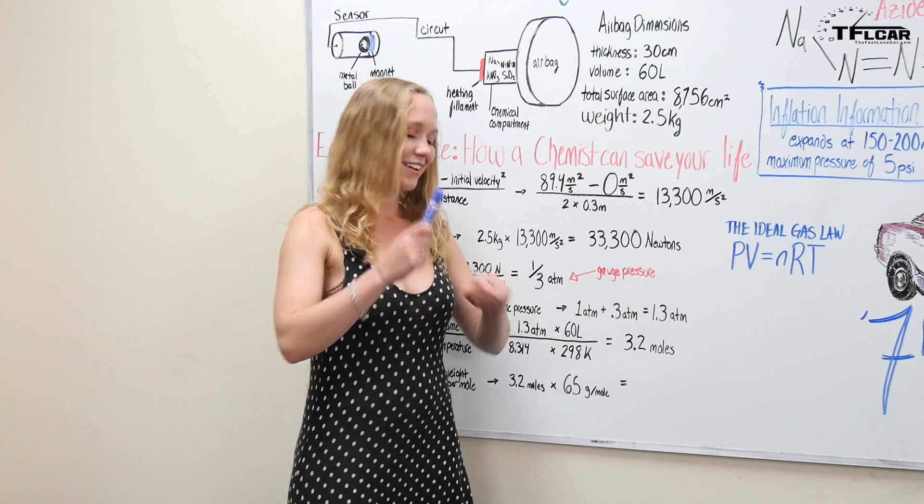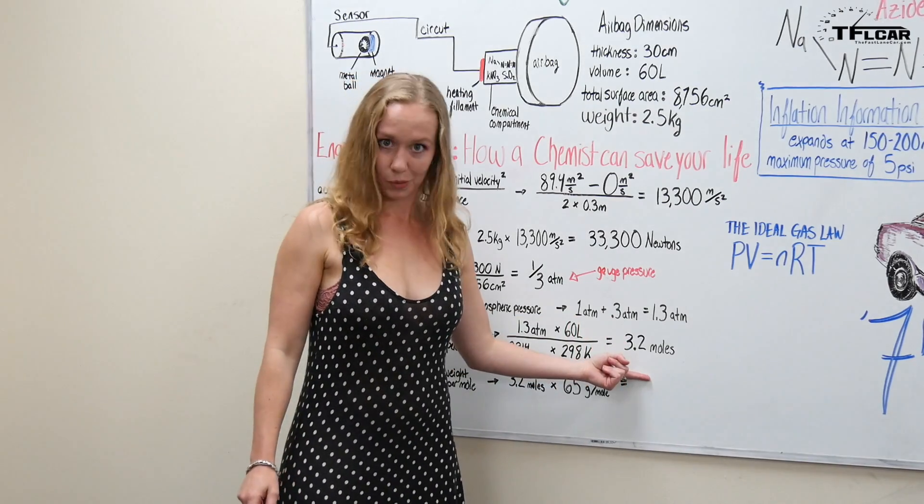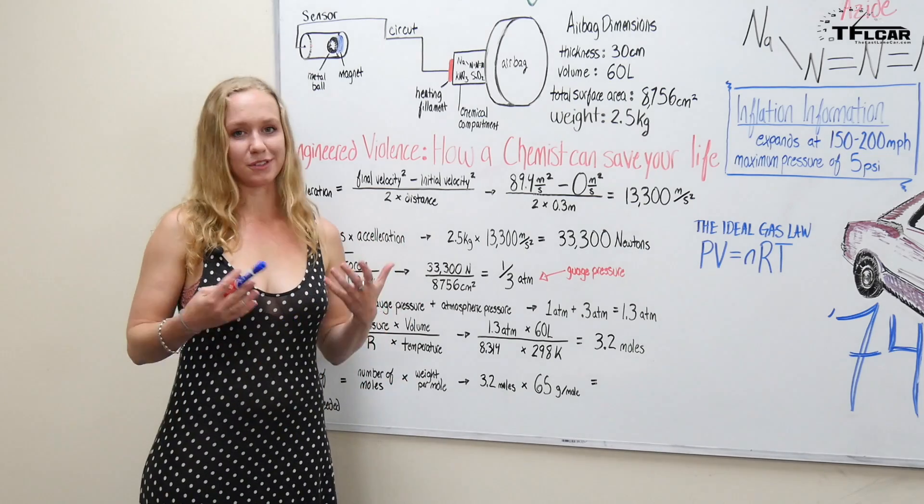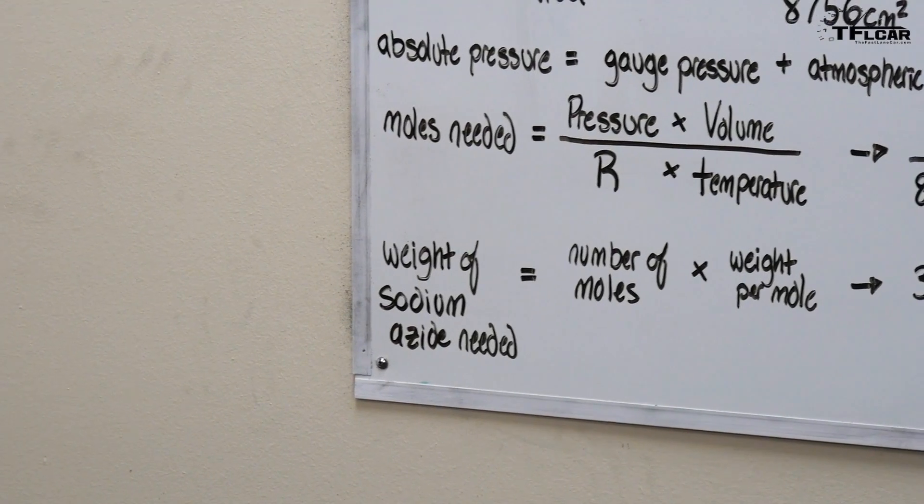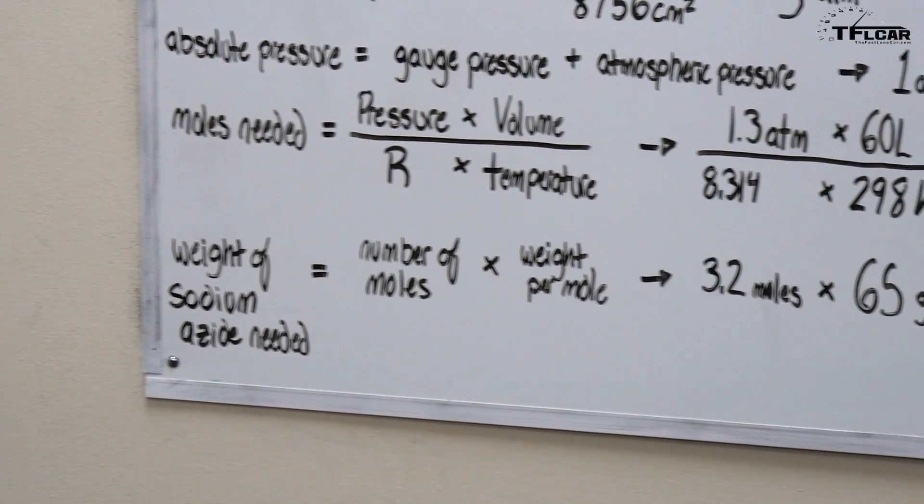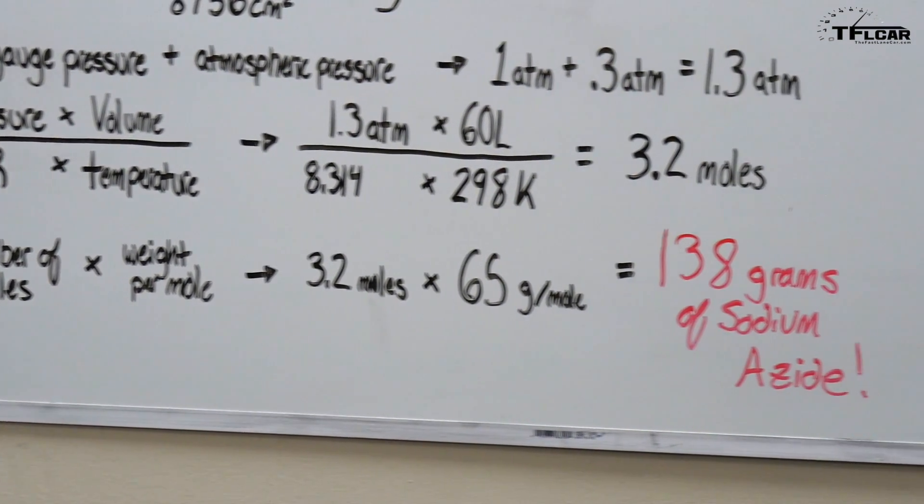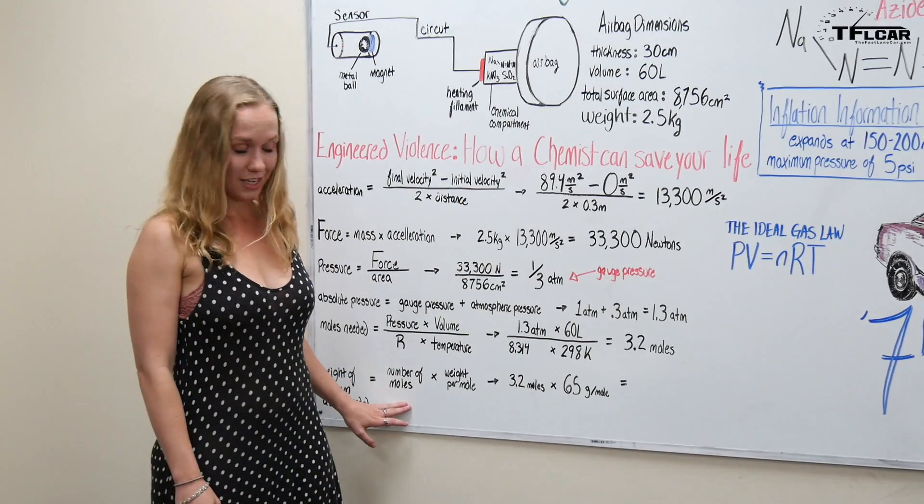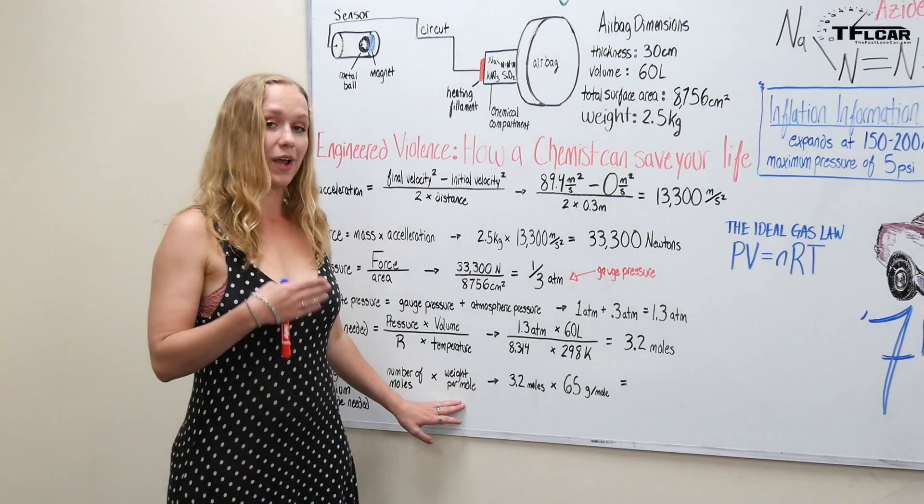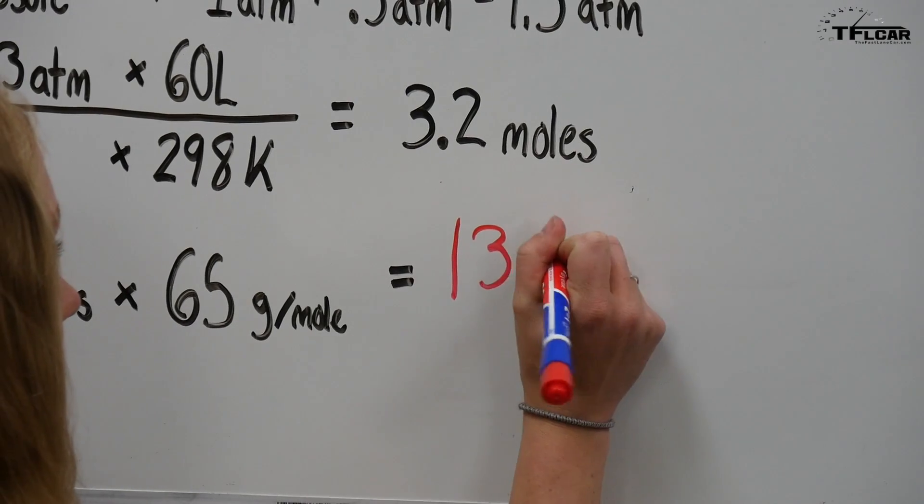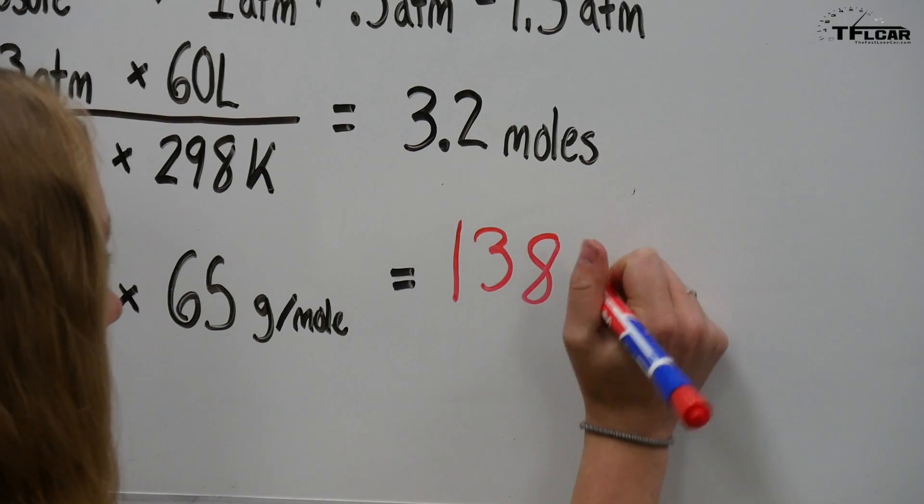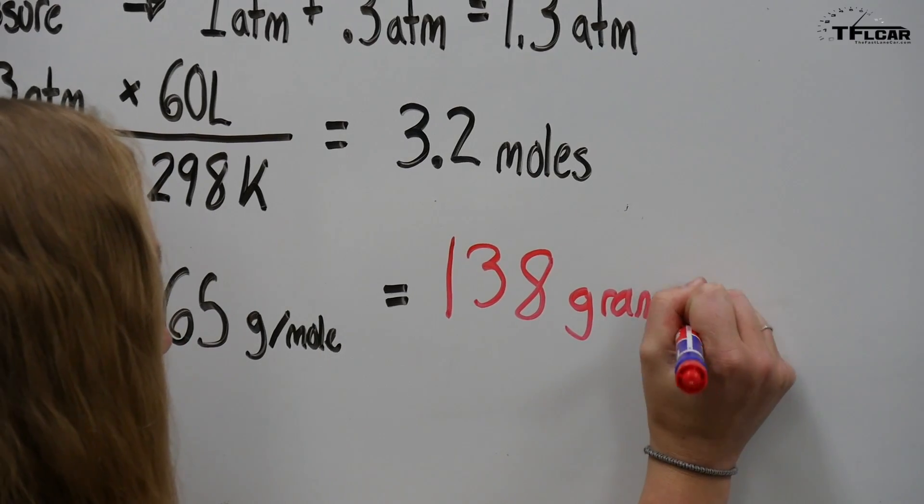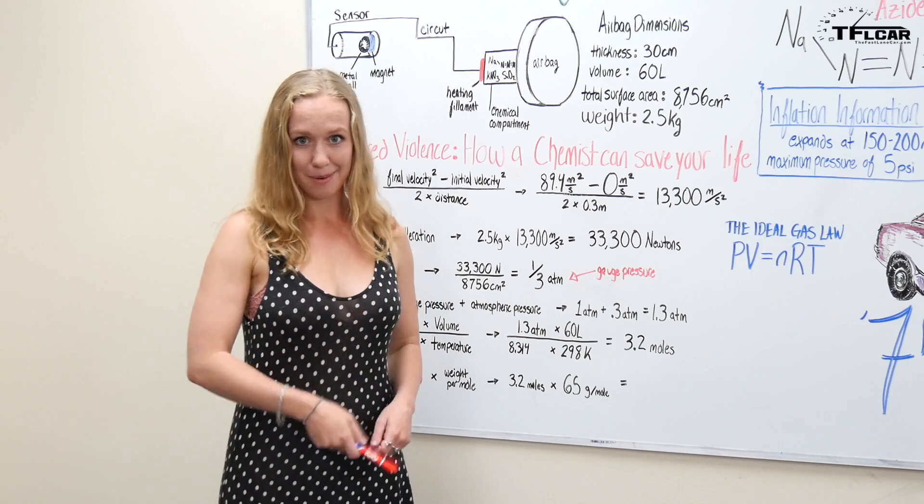So when you do all that simplistically put you get 3.2 moles. Basically a mole is a measure of how much chemical substance there is. That's all it is. It's just an amount of something. If I have a little jar of sodium azide and I'm trying to figure out how much I need to put in. Well basically all you do is you take the number of moles that you need and then you multiply it by the weight per mole and then that is 3.2 times 65 grams per mole and then you get 138 grams of sodium azide that I need to put in your airbag to save your life.